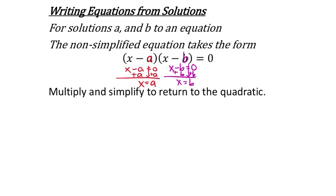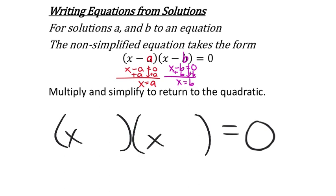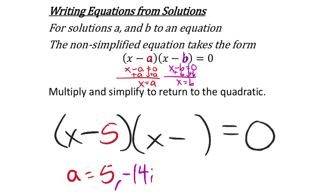If one solution is 5 and the other is negative 14i, you'd write (x minus 5)(x minus negative 14i) equals zero, which becomes (x minus 5)(x plus 14i) equals zero, because minus a negative makes a plus. Then you distribute and simplify into standard quadratic form.